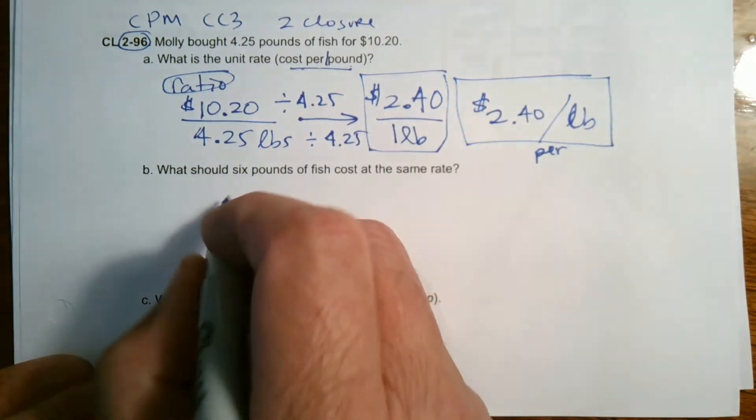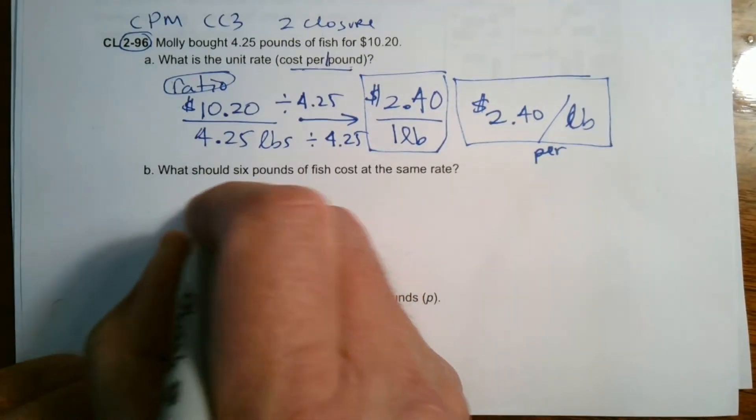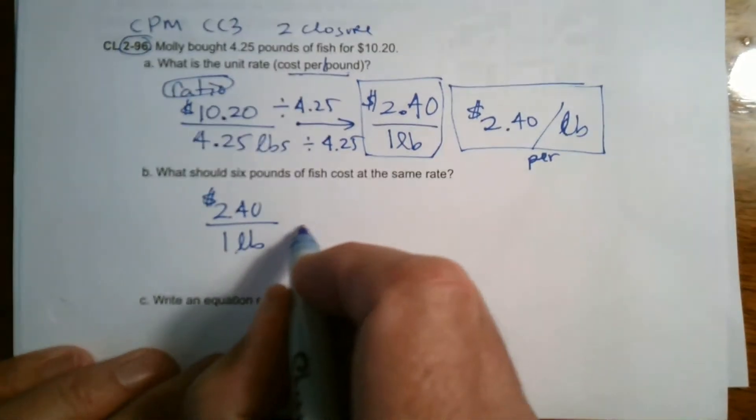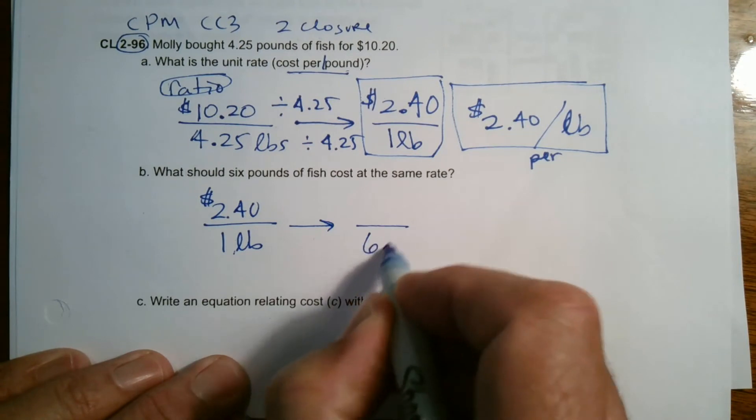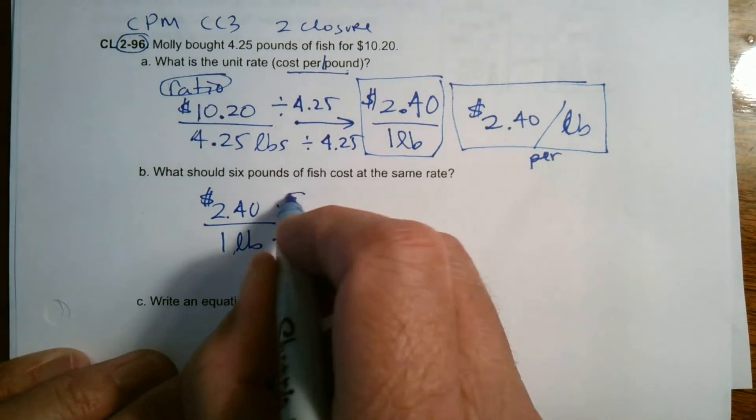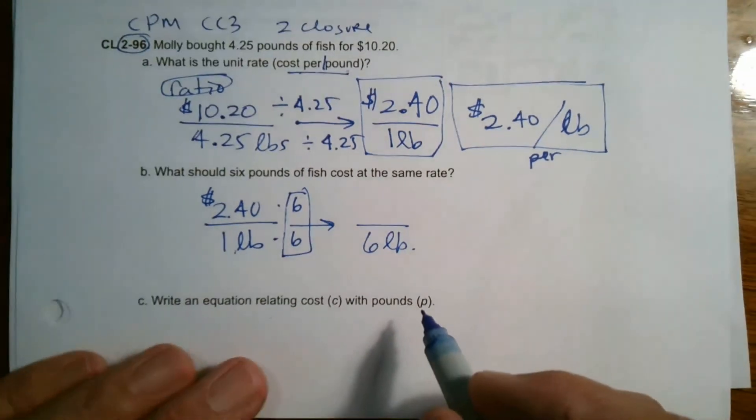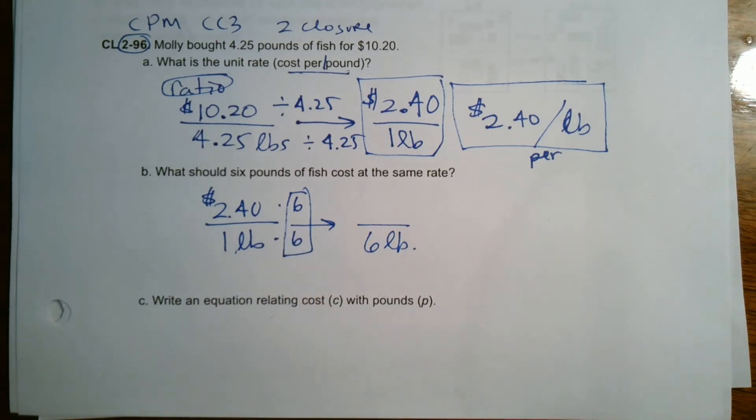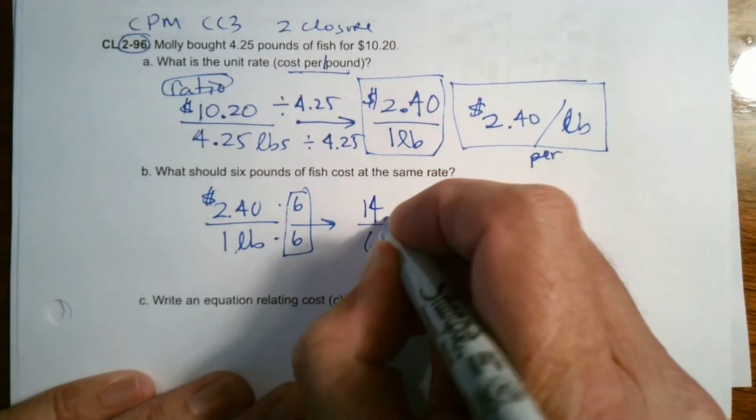Again, think about this as a fraction, right? It's $2.40 for one pound. I need to know how much it is for six pounds. So I'm going to multiply top and bottom by six, that giant one, if you will, of six. So that's one way of looking at it. So we're going to go six times $2.40.